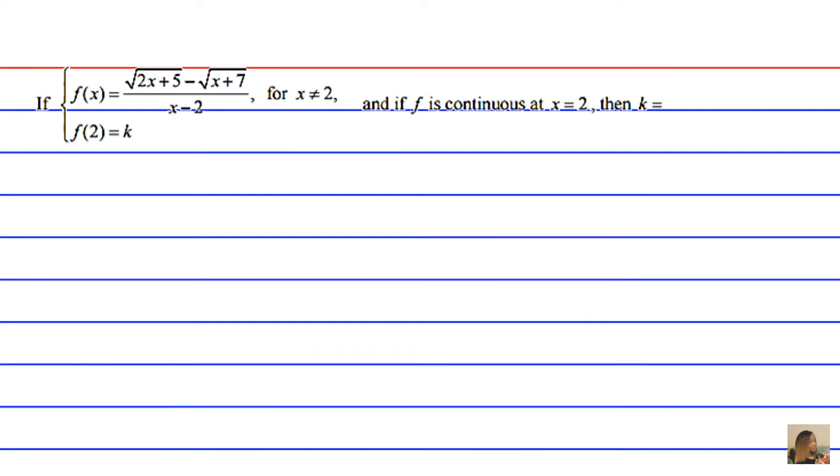If f(x) is equivalent to the square root of 2x plus 5 minus the square root of x plus 7, all over x minus 2, for x is not equal to 2 and f(2) equals k, and if f is continuous at x equals 2, then k is equivalent to: